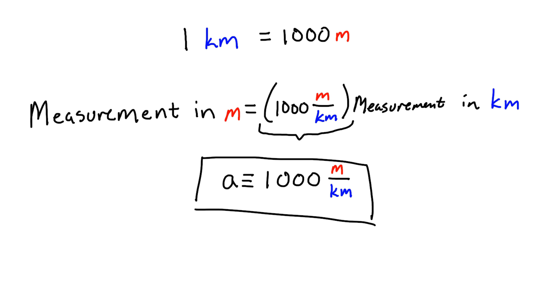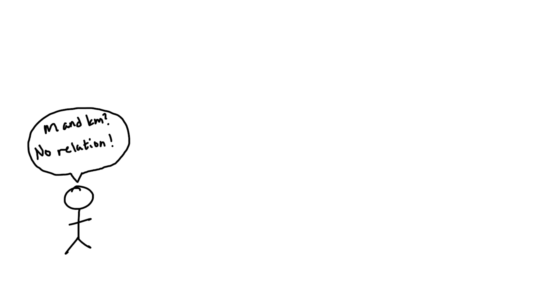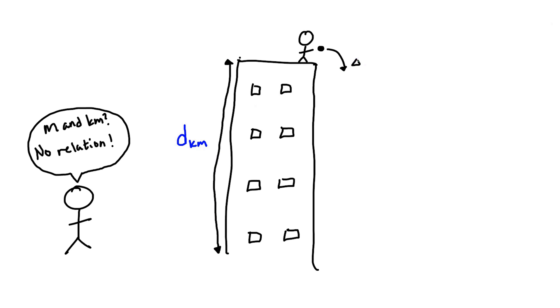To see the role that physical constants play, let's assume we had no idea that kilometers and meters were both measurements of distance. Now, say we make a bunch of measurements of the heights of buildings and the distances objects fall when dropped from the same buildings. But we do something dumb. We measure the heights of the building in kilometers and the distances the objects fall in meters.